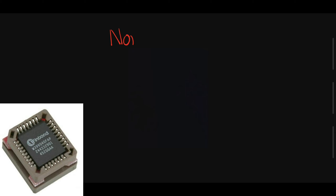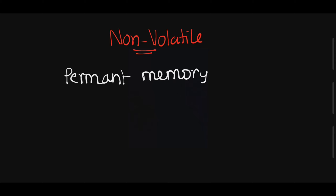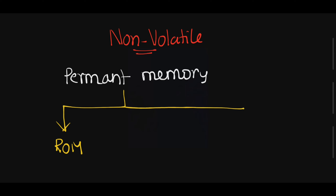Non-volatile memory means permanent memory. What is the meaning of permanent memory? A small amount of data is stored in the concept of ROM, and permanent large-amount data is stored in secondary or auxiliary memory — both come under non-volatile memory.